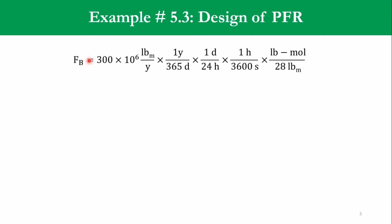First we are given that it is 300 million pound per year which is ethylene specified as B. So we convert it like pound per year. One year contains 365 days, one day contains 24 hours, one hour contains 3600 seconds, and one pound mole contains 28 pounds. So once after you get it, you get F of B is equal to 0.34 pound mole per second, or one pound mole is equal to 454 mole, so we get 154.4 mole per second.